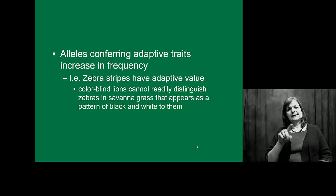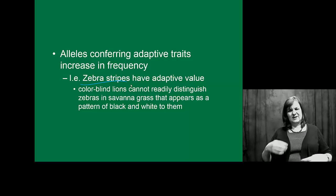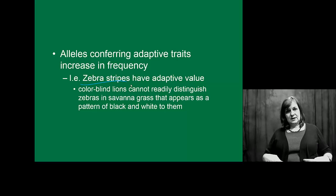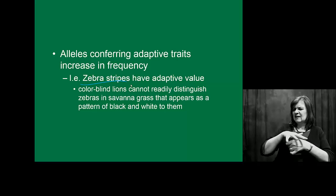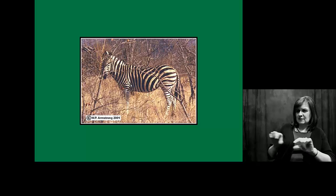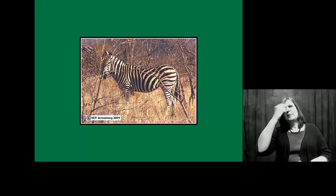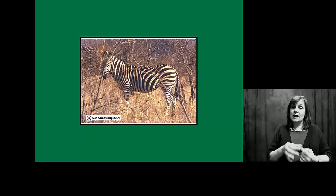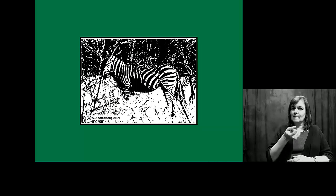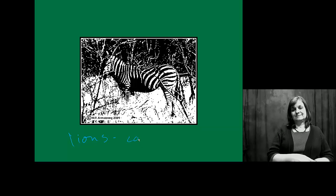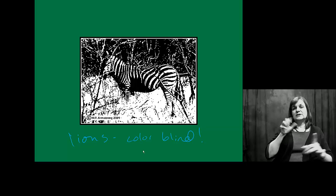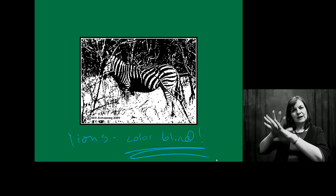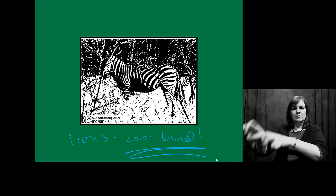Let's look at zebras. Zebras have stripes. The interesting thing about zebra stripes is they've been maintained. People often say they live in a striped environment, but a black and white zebra in a brown savanna isn't really camouflaged — unless your predator is color blind. Lions are color blind, and lions are one of the biggest predators of zebras. So a zebra actually blends in quite well as long as he holds still. If he starts running around, that's a different story.